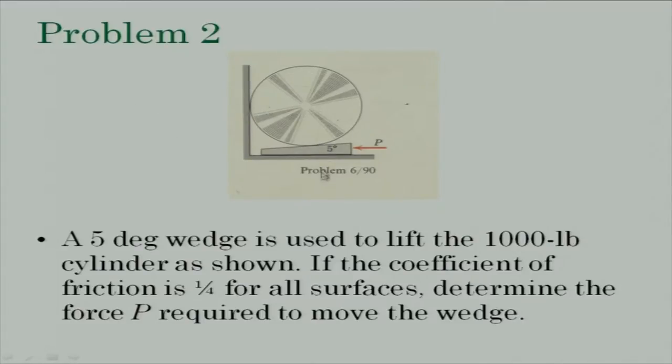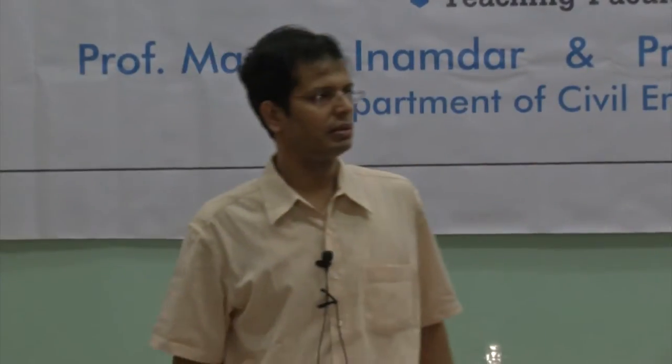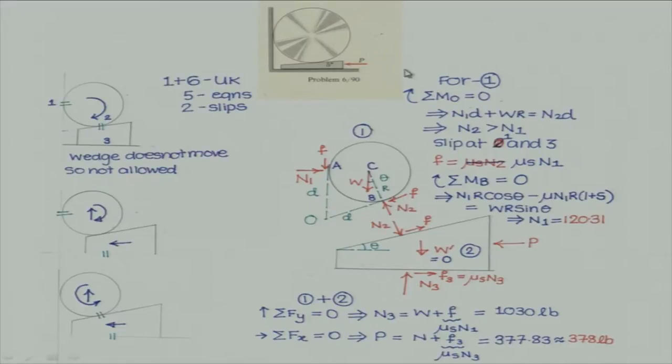So essentially the competition is: does slip happen here and here, or here and here? Think about the wedge trying to move inside. We need to find out what the impending motion is, so we can immediately decide the direction of friction. The typical strategy: this cylinder can have an infinitesimal rotation giving slippage at contact 1 and 2. But this is useless — the cylinder cannot simultaneously start to rotate, and in this mechanism the wedge does not go anywhere, which is what we want. So this mode is completely out.